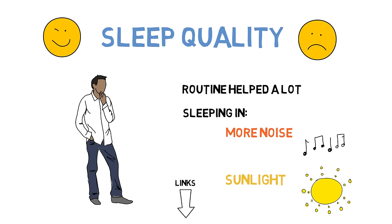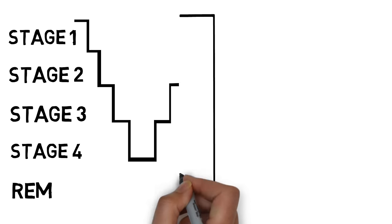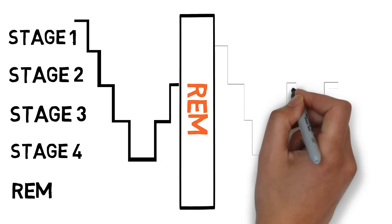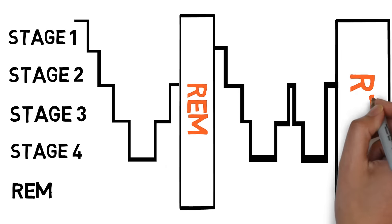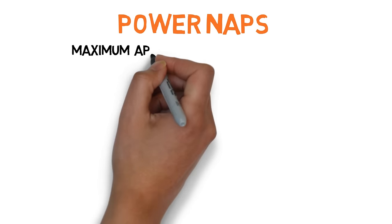Sleep occurs in stages from stages 1, 2, 3, 4 and REM standing for rapid eye movement which is when dreaming occurs. When you first fall asleep, you are in early stages of sleep and over time you go deeper and then cycle through them, spending more and more time in deeper sleep. Because of this, power naps should be a maximum of 20 or so minutes.